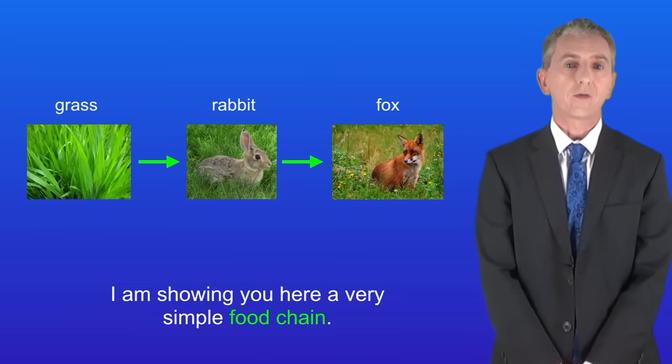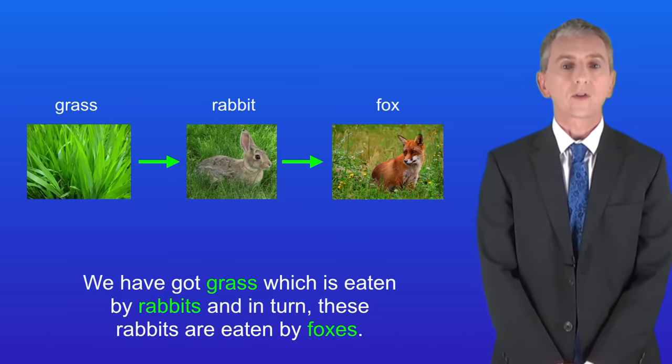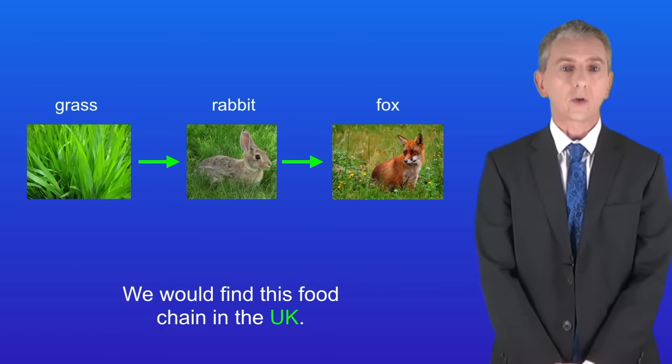I'm showing you here a very simple food chain. We've got grass which is eaten by rabbits and in turn these rabbits are eaten by foxes. We'd find this food chain in the UK.